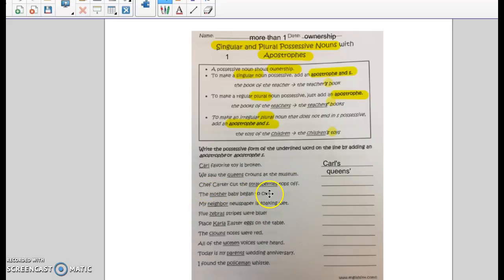Chef Carter cut the strawberry's tops off. Well, he's not cutting the top off of one strawberry. He's cutting the top off of many strawberries. So it already has the S on the end, add an apostrophe. You can cover it up, you still have strawberries. The mother baby began to cry. So basically, the mother's baby. We are talking about one mother. It only has one mother. So then we put an apostrophe S because it's only one. The mother's baby began to cry.